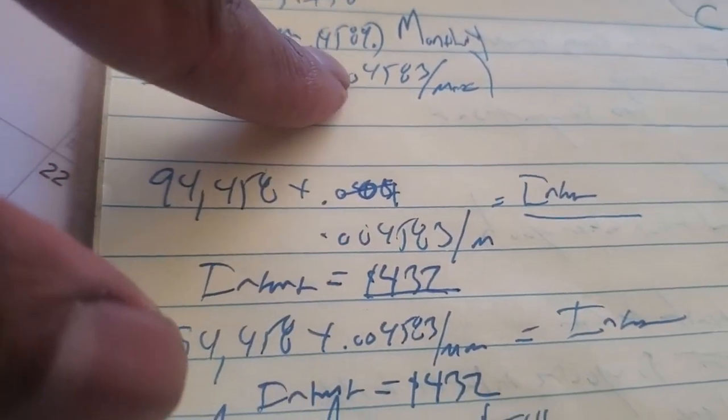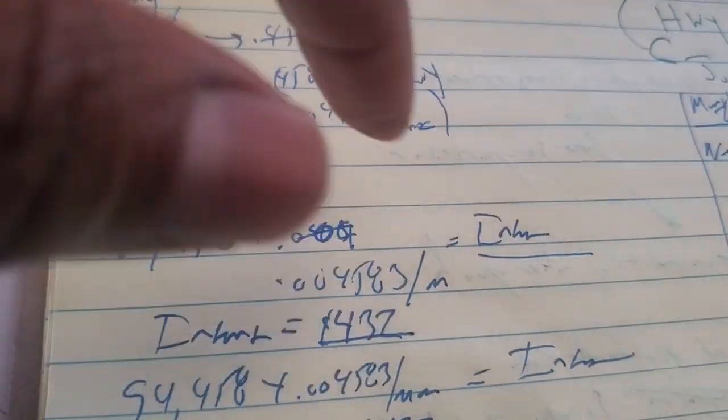Take your monthly interest times your current balance. That's how the company charges you. Do that calculation and we'll move from that forward later.